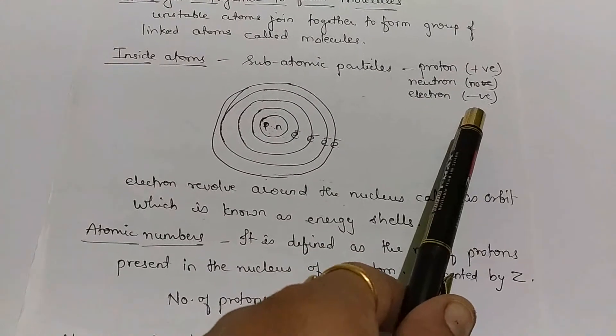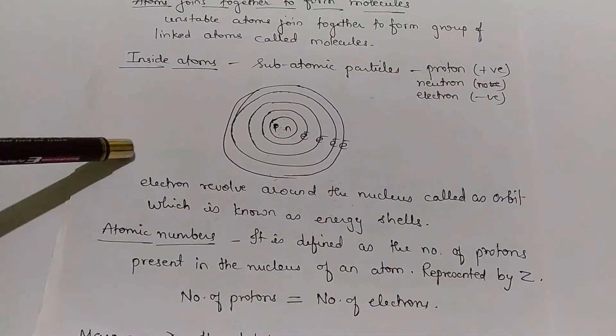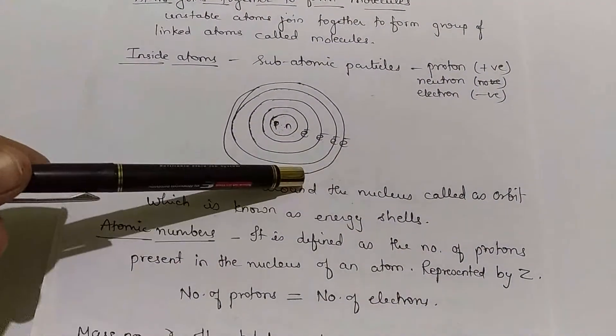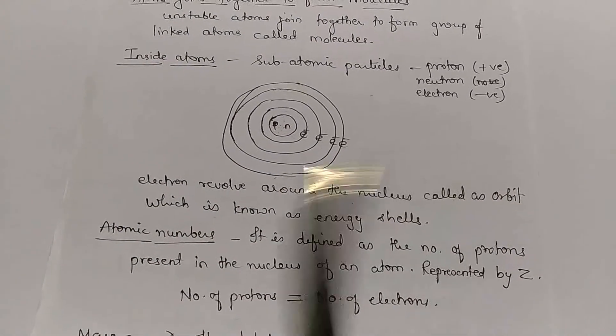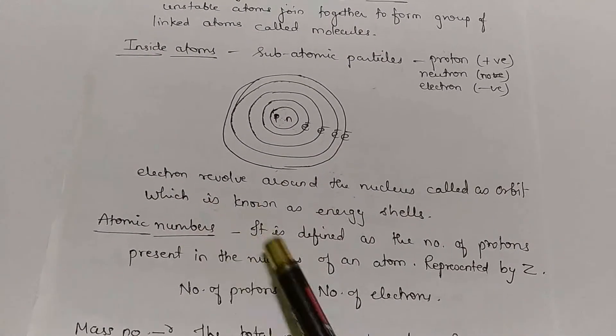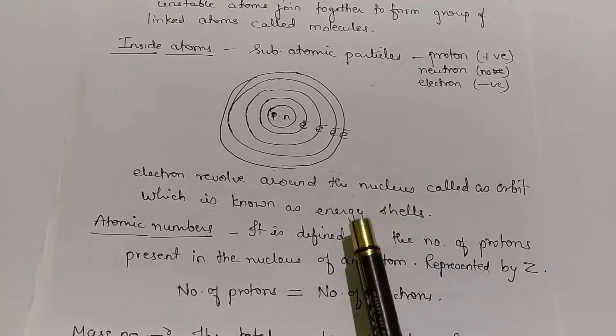In the orbits, the third subatomic particle that revolves is called an electron. Electrons are negatively charged particles. The electrons revolve around the nucleus in an orbit, which is also called an energy shell.